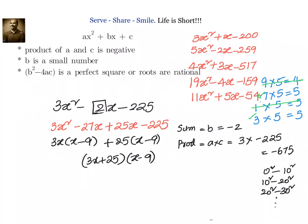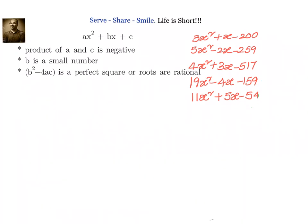Let's do one more problem. Let's take one more example. Let us take 4x² plus 3x minus 517. What is our b? Minus 3. What is the product of a and c? That is 4 into minus 517, that is minus 2068. Again the criteria satisfied, b is a small number and the product of a and c is negative.